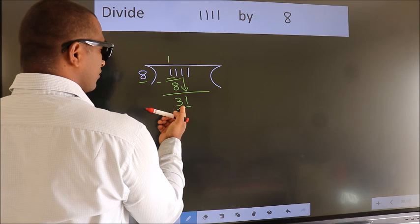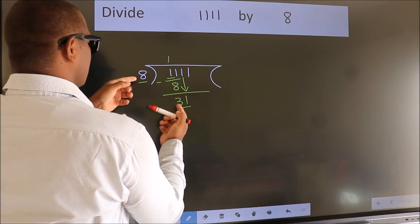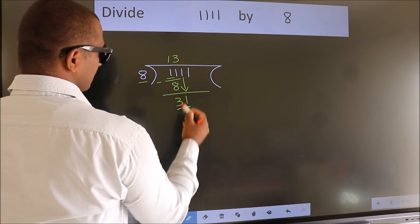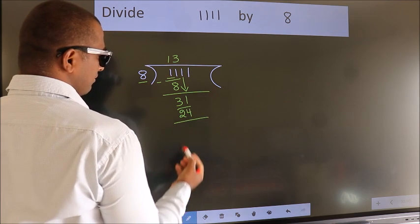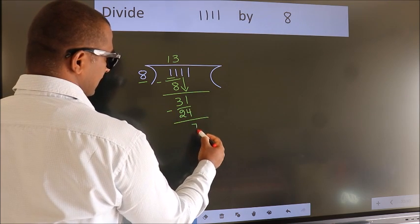A number close to 31 in the 8 table is 8 threes, 24. Now, we subtract. We get 7.